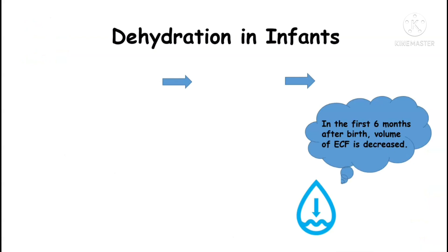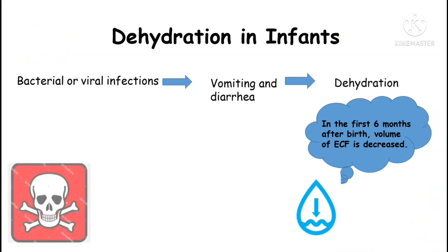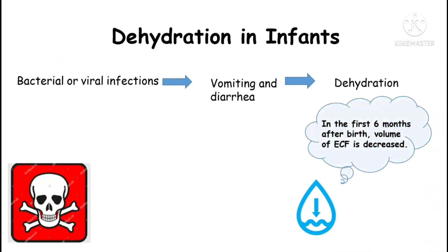Dehydration in infants is caused by bacterial or viral infection that leads to vomiting and diarrhea, which ultimately causes dehydration. It becomes life-threatening if the lost body fluids are not replaced, as in the first six months after birth, the volume of extracellular fluid is already decreased, so dehydration affects infants very badly.